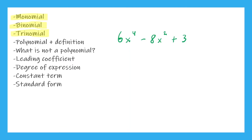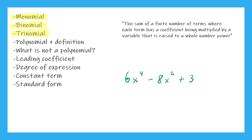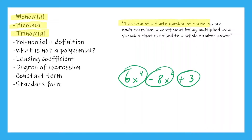Now let's talk about what exactly makes a polynomial a polynomial, and what makes something not a polynomial. We'll read through the full definition and then talk about it piece by piece. A polynomial is the sum of a finite number of terms, where each term has a coefficient being multiplied by a variable that is raised to a whole number power. That first part — a finite number of terms — means the number of terms cannot go on forever; there needs to be a defined amount. In our example we have one, two, three terms.